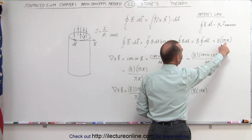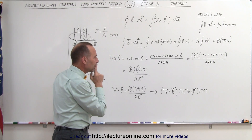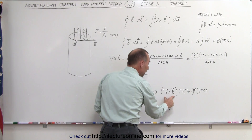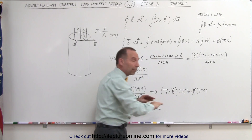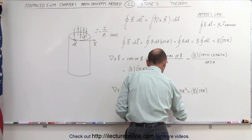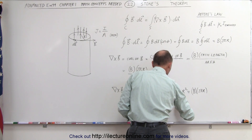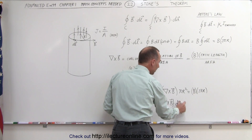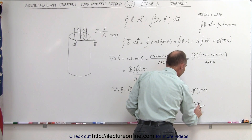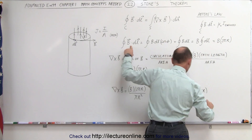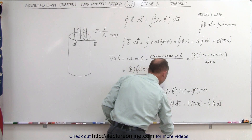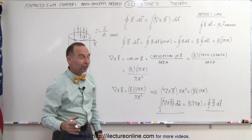Notice B times 2πR is what we got when we integrated the left side of that equation. The curl of B times πR² — isn't that the same as the integral of the curl of B times the small area element dA? Because this represents the total cross-sectional area. So we can write this as the surface integral of the curl of B dotted with area element dA. If we integrate dA we get πR², and that equals B times 2πR, which equals the integral of B dot dL. So this equals this, and that represents Stokes' theorem.